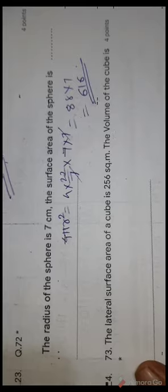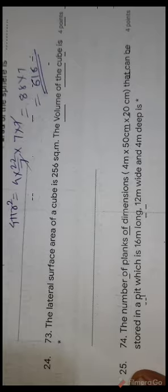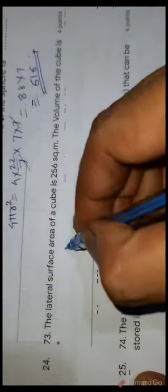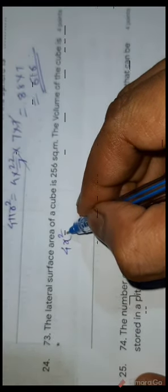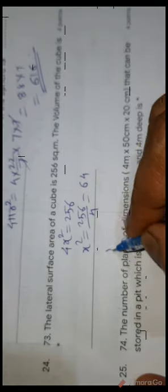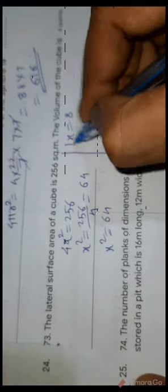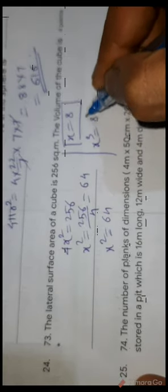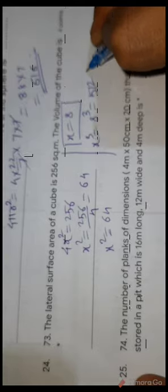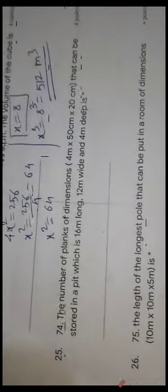Question 73: the lateral surface area of a cube is 256 cm². Lateral surface area = 4x² = 256, so x² = 64, x = 8 cm. Volume of cube = x³ = 8³ = 512 cm³.